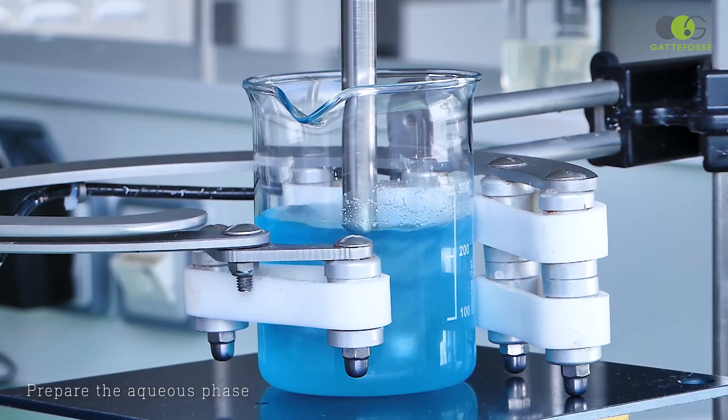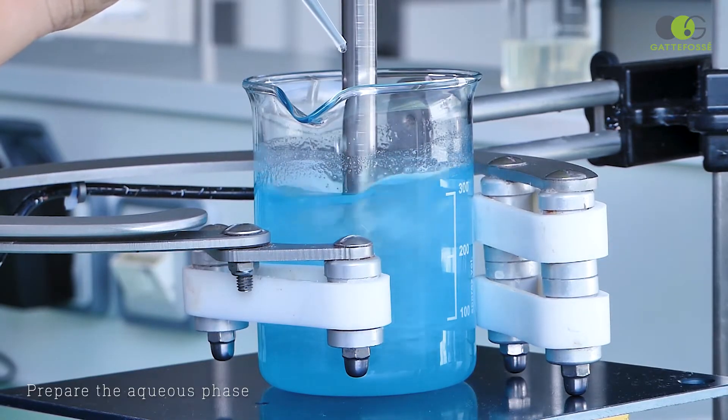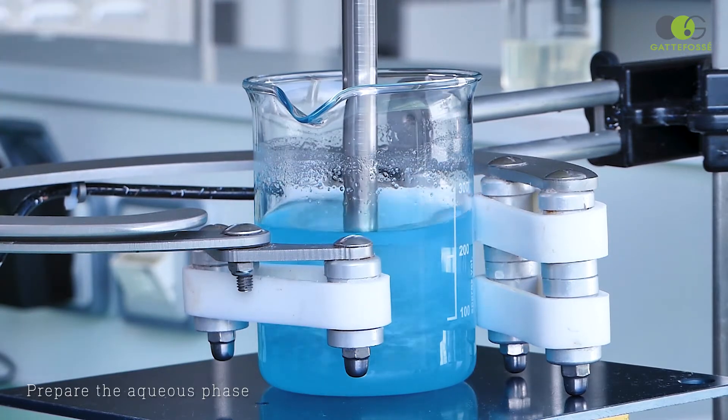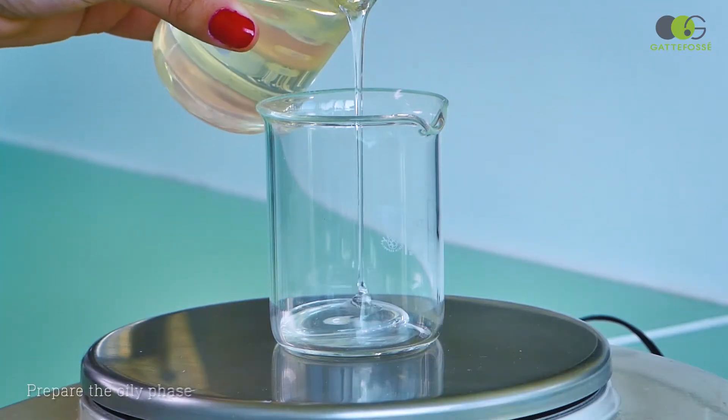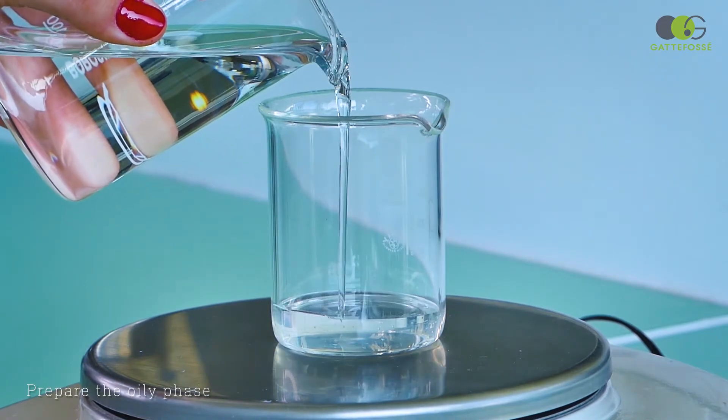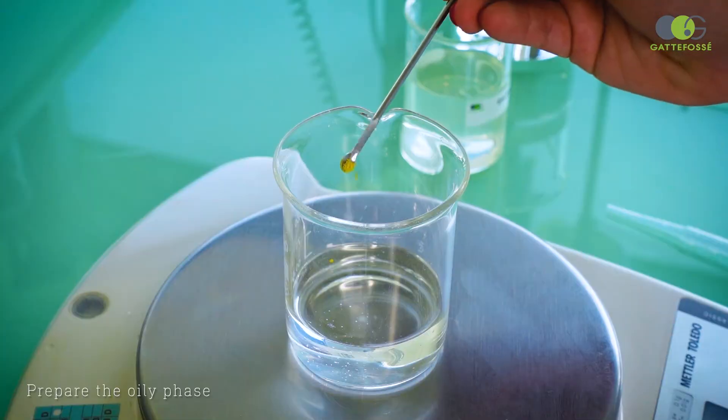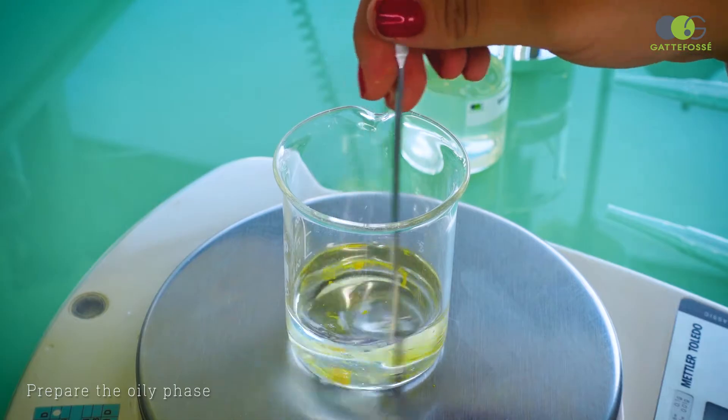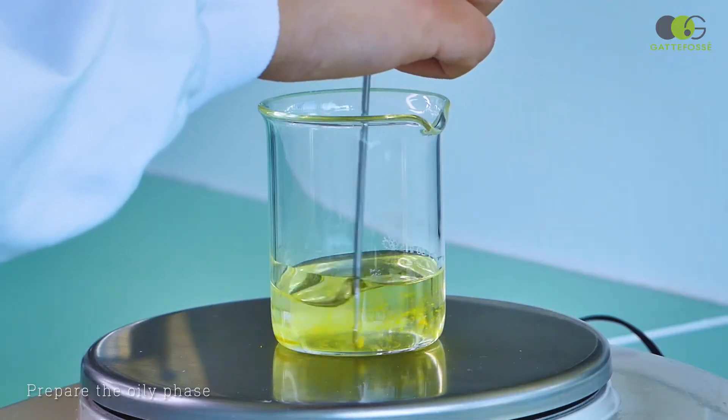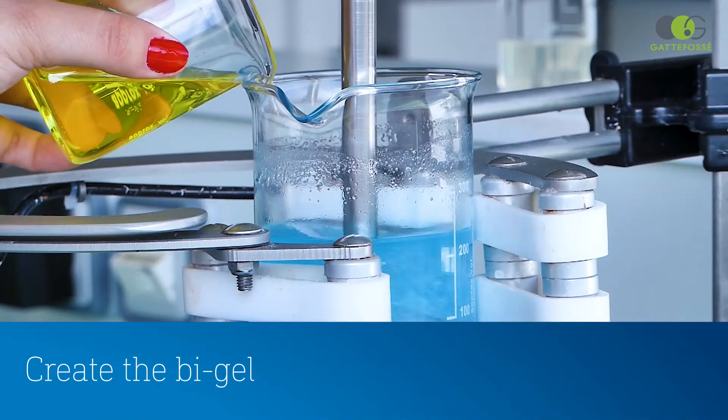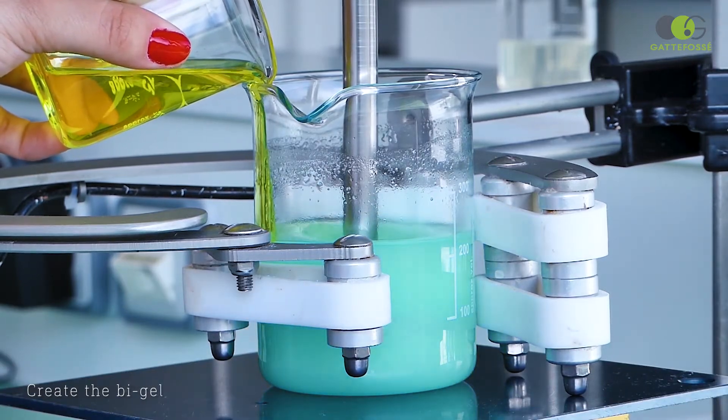The oily phase is prepared by mixing ML-free Duo and the oil. For the purpose of the demonstration, a yellow colorant has been added to the oily phase. The oily phase is slowly poured into the aqueous phase.